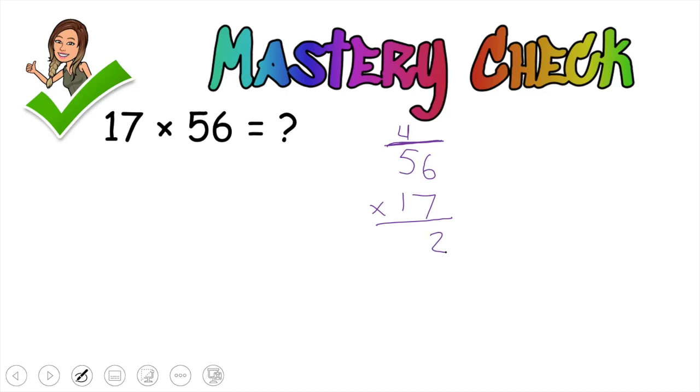Okay. Now 7 times 5 is 35 plus 4 is 39. Put that down and we add the little x here.